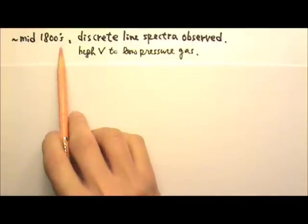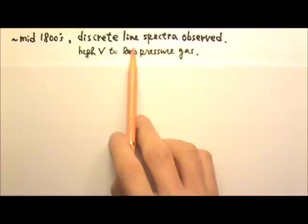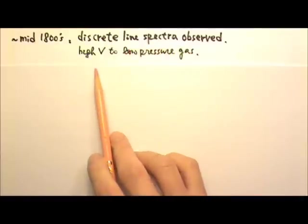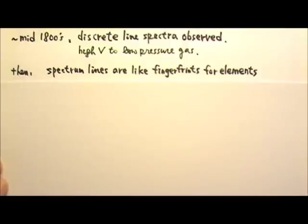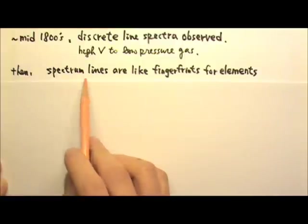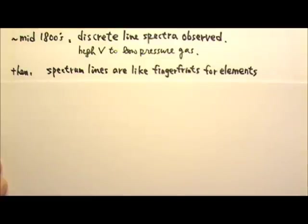In the mid-1800s, discrete line spectra were observed when a high voltage was applied to a low-pressure gas. In the second half of the 19th century, scientists expended great efforts in measuring the wavelength of line spectra of different elements. They discovered that each element produces a specific set of spectrum lines, kind of like fingerprints for elements. Scientists could use the spectrum produced by a gas to tell which elements are involved.